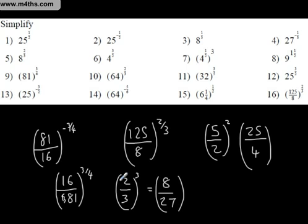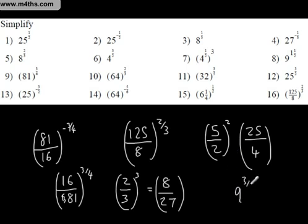There will be nothing that you can't do, really. Let's look at 9 to the 1 and 1 half. We could write this as 9 to the 3 over 2 power. We take the square root, which is 3. We cube it and we get 27.